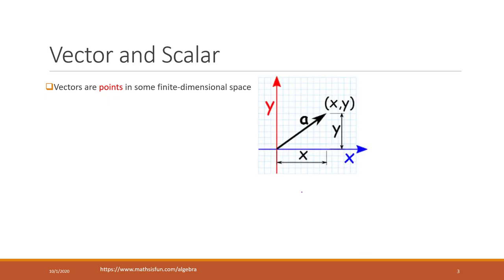Let's say that we have one vector A, and we put that A in a two-dimensional space — X and Y. The vector A is this point that has two coordinates: small X and also small Y. Those are the two coordinates of this vector in this two-dimensional space.